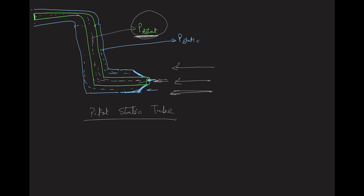Now in the outer tube, the walls prevent air particles from entering directly. But on this outer tube we have some holes — these are known as static holes. The air particles are not directly entering, but since particles are always moving randomly, because of this random motion there is some pressure inside these ports.